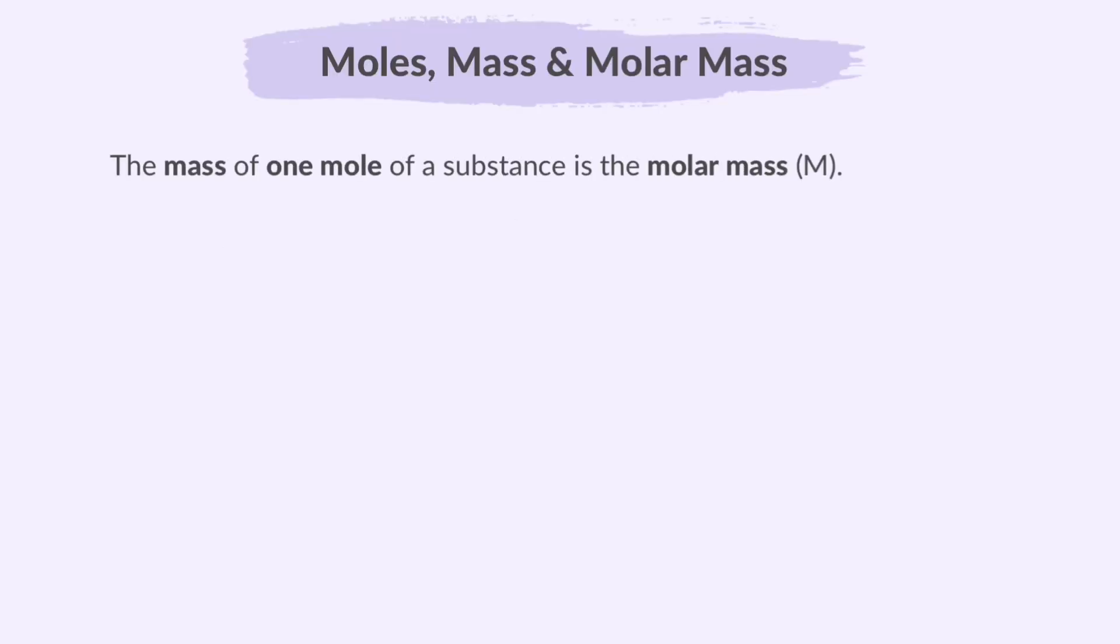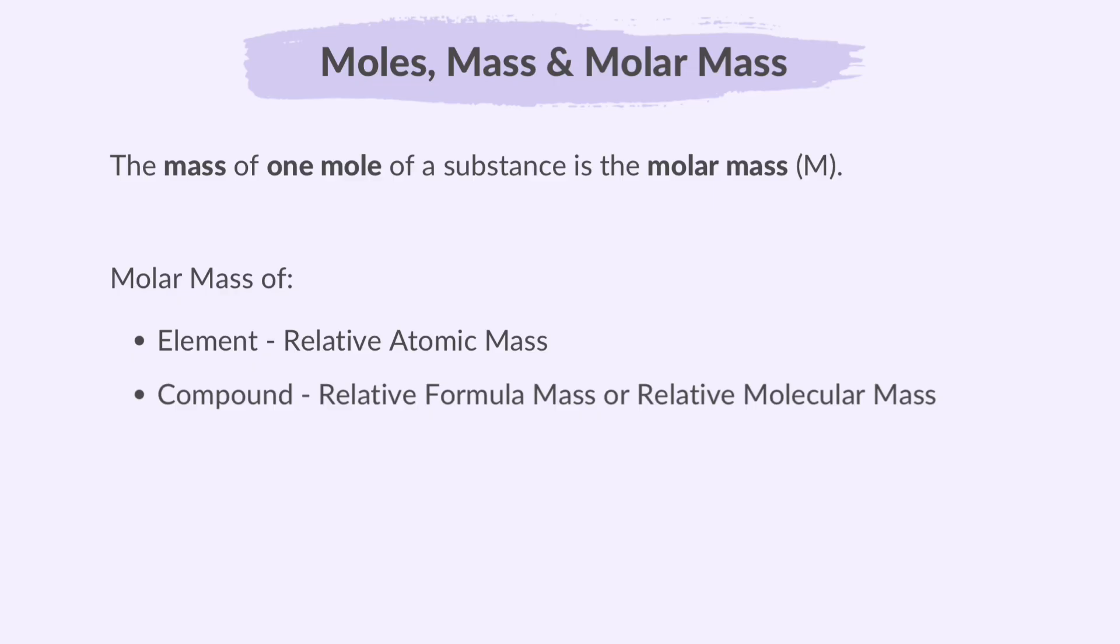The mass of one mole of a substance is the molar mass, or capital M. For an element, the molar mass is the same as the element's relative atomic mass, and in the case of a compound, the molar mass is the relative formula mass, or relative molecular mass. Molar mass is expressed in grams per mole.